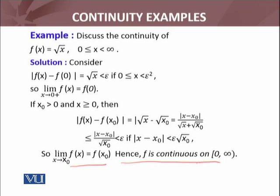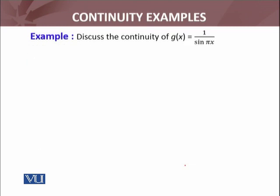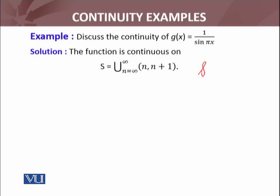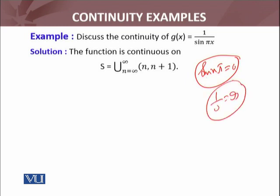Now discuss the continuity of g(x) = 1/sin(πx). To discuss its continuity, we need to know that sin(nπ) = 0 whenever x is a multiple of π — that is, when x = 0, ±π, ±2π, ±3π, and so on. At those points, 1/sin(πx) becomes 1/0, which is infinity, so the function is not defined there.